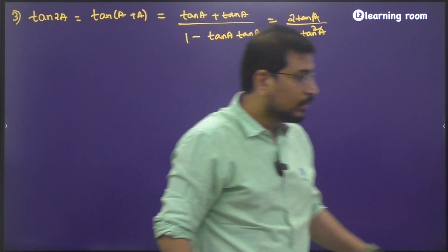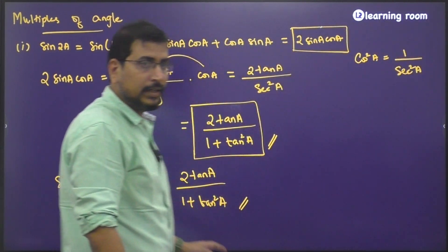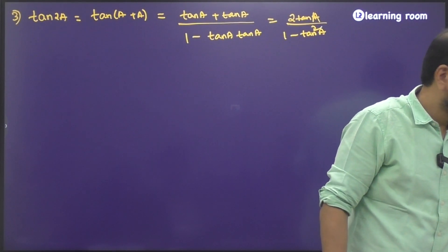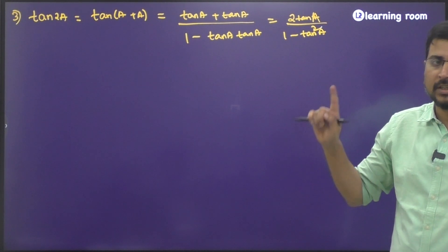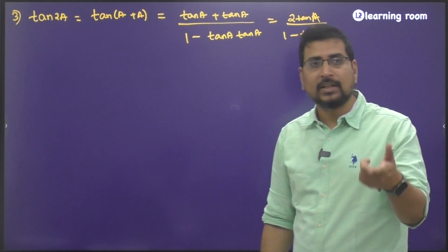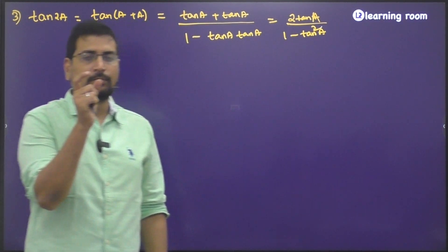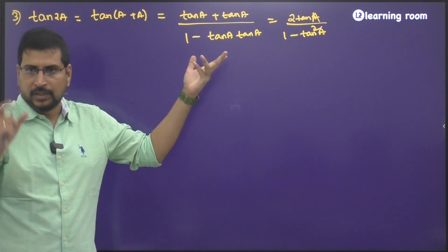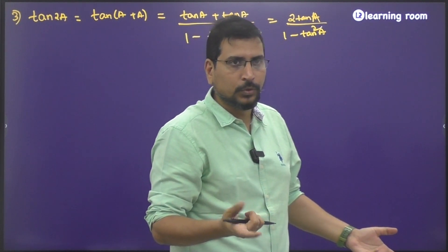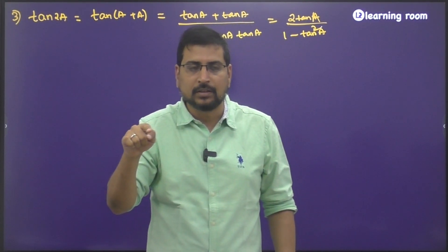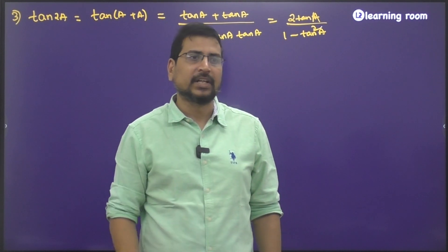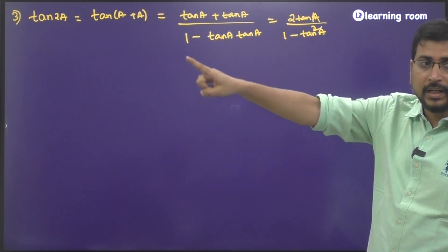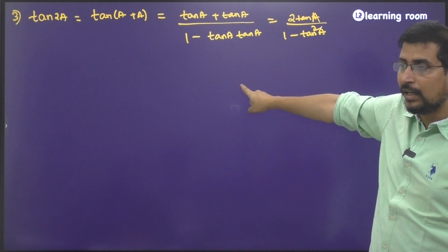Third, tan 2a. This can be written as tan of a plus a, which will be equal to tan a plus tan a divided by 1 minus tan a into tan a. So tan a plus tan a gives you 2 tan a by 1 minus tan square a. This is where I want you to concentrate — there is a similar expression for sine 2a: 2 tan a by 1 plus tan square a. Whereas here for tan 2a, it is 2 tan a by 1 minus tan square a. Minus comes for tan because whenever it is x plus y, the denominator has 1 minus.